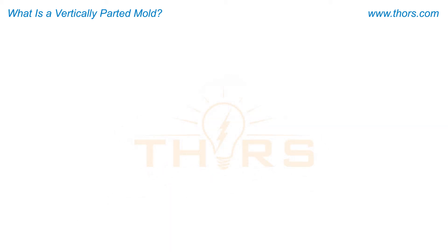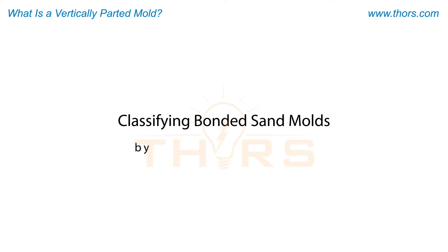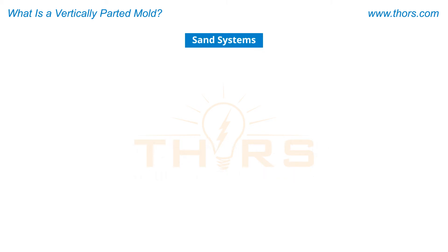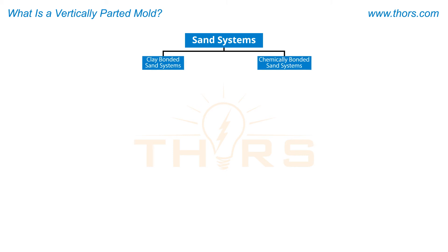One method for classifying bonded sand molds is by the type of binder used. On this basis, bonded sand molding can be broadly classified into clay bonded sand systems and chemically bonded sand systems.